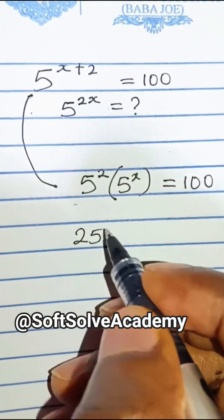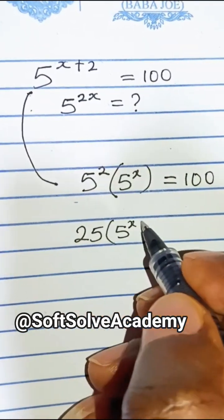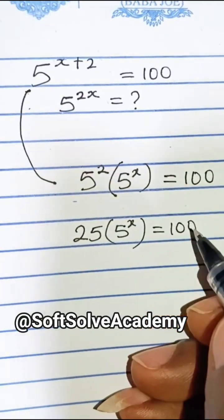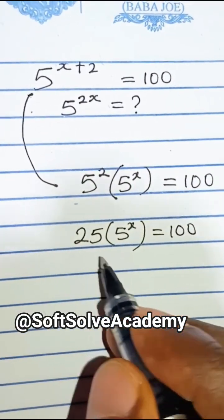This becomes 25 times 5 to the power of x, which equals 100. So we divide both sides by 25.